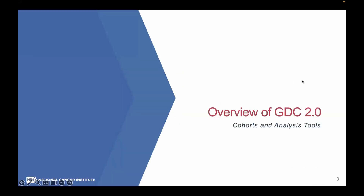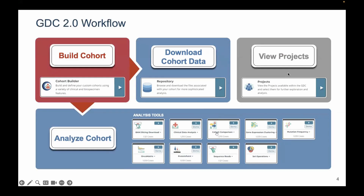I'm going to give you a very quick overview of GDC 2.0. The basic GDC 2.0 workflow starts with building a cohort and using that cohort to download the associated data, or those cohorts can be brought to all of the different analysis tools, which will apply automatically to that particular cohort.